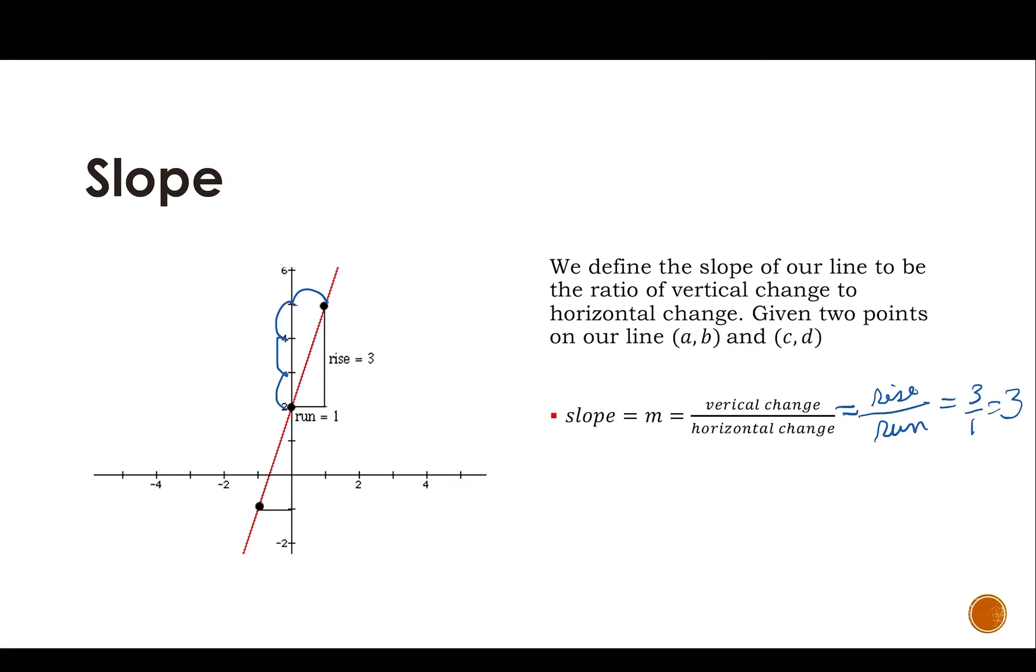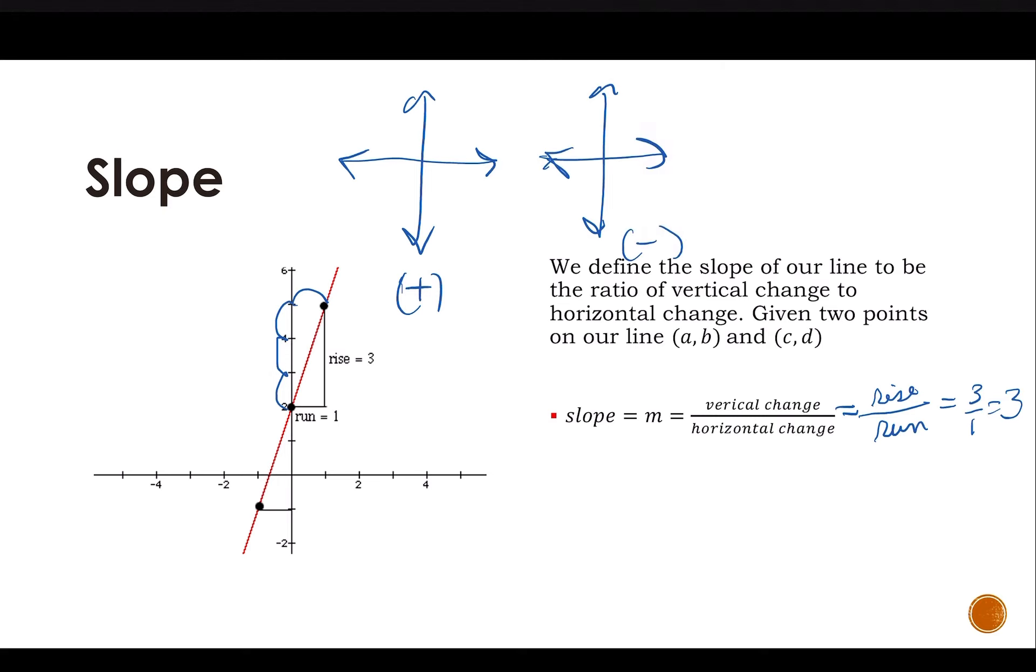Now the types of slopes we're going to be looking at today are two types of slopes. We're going to have positive slope and negative slope. What does that look like? I'm so glad you asked.